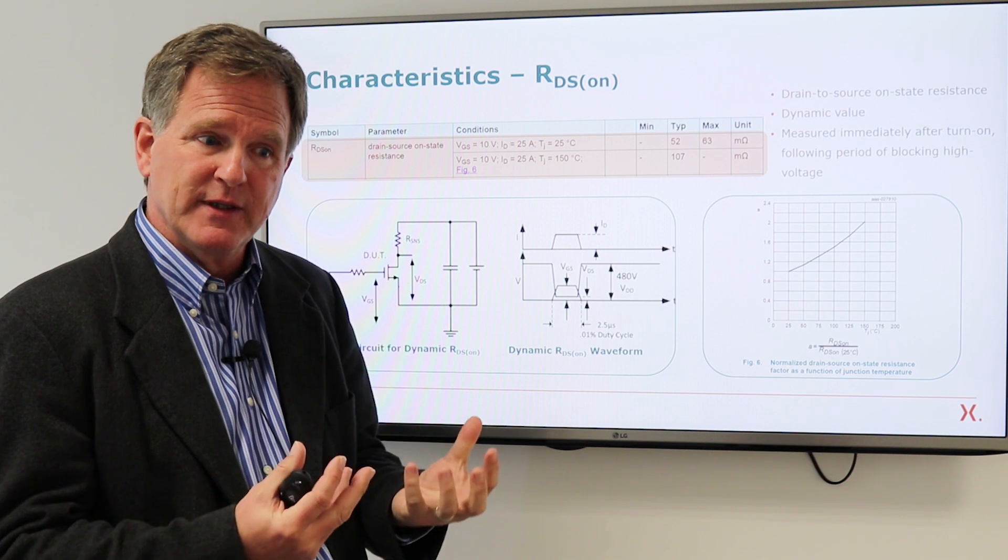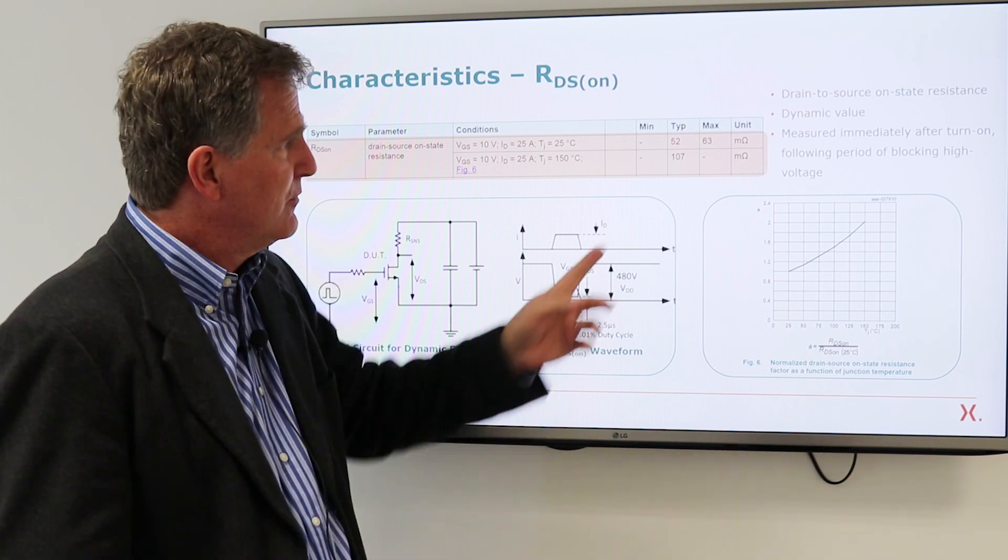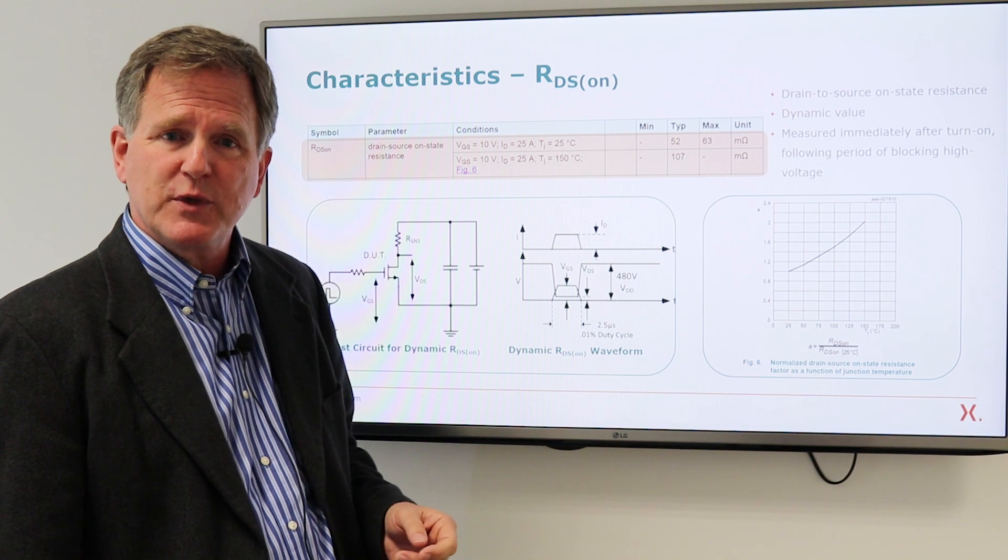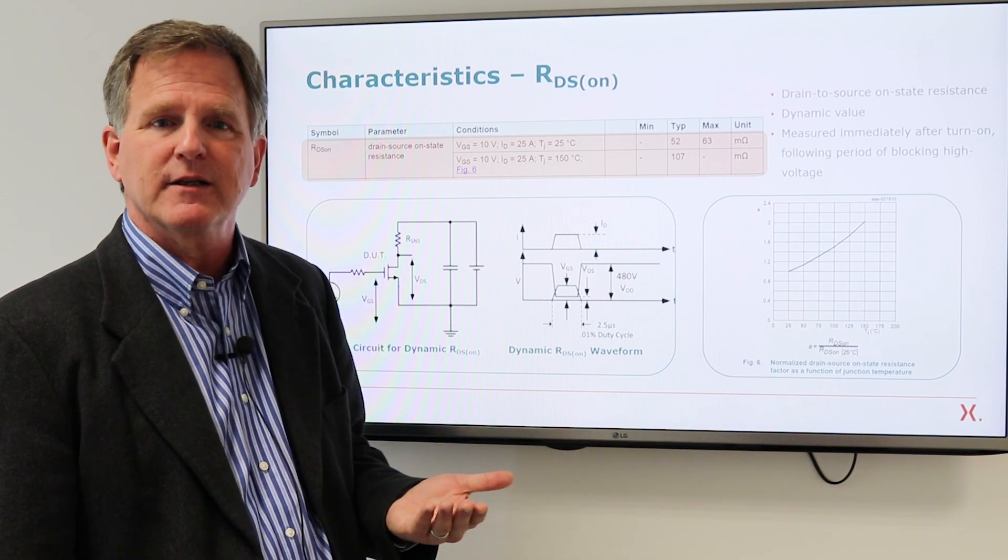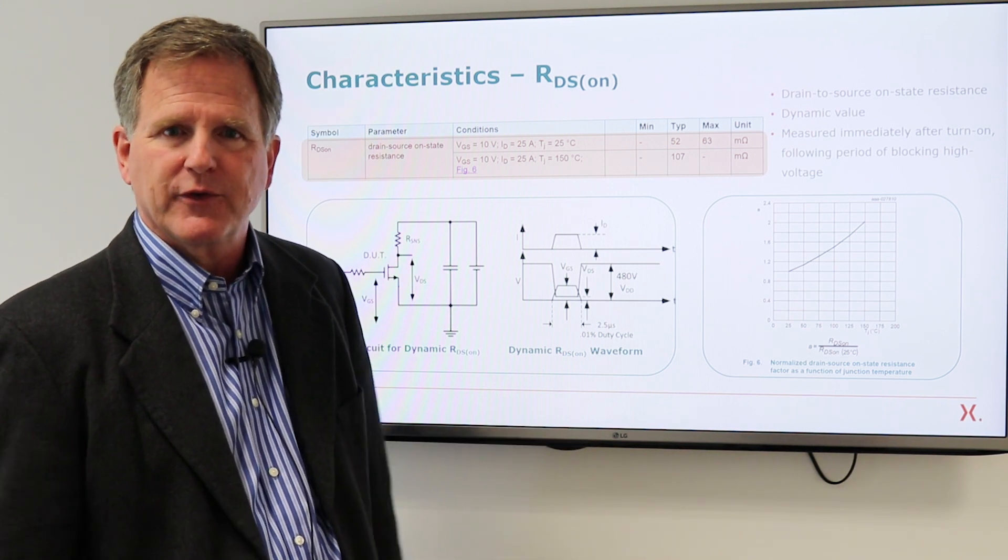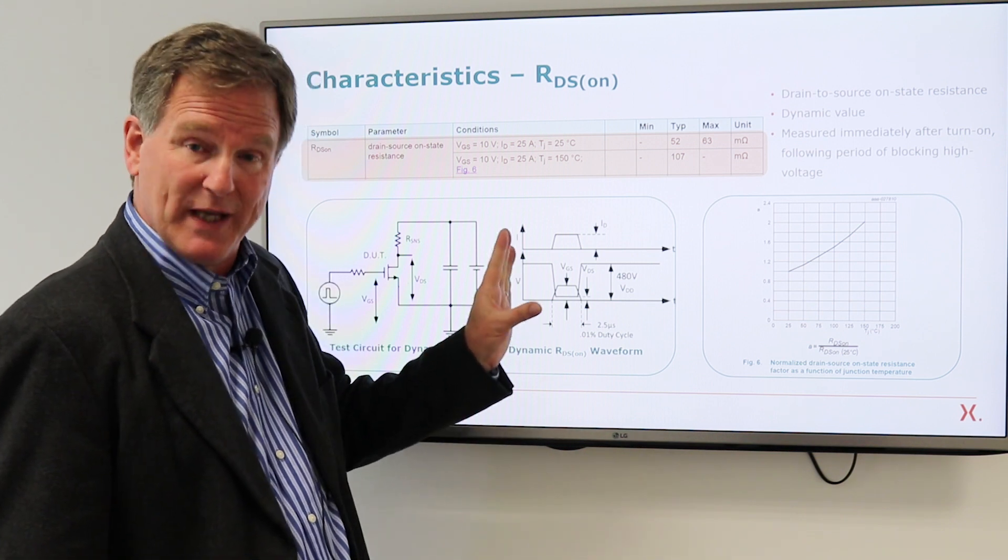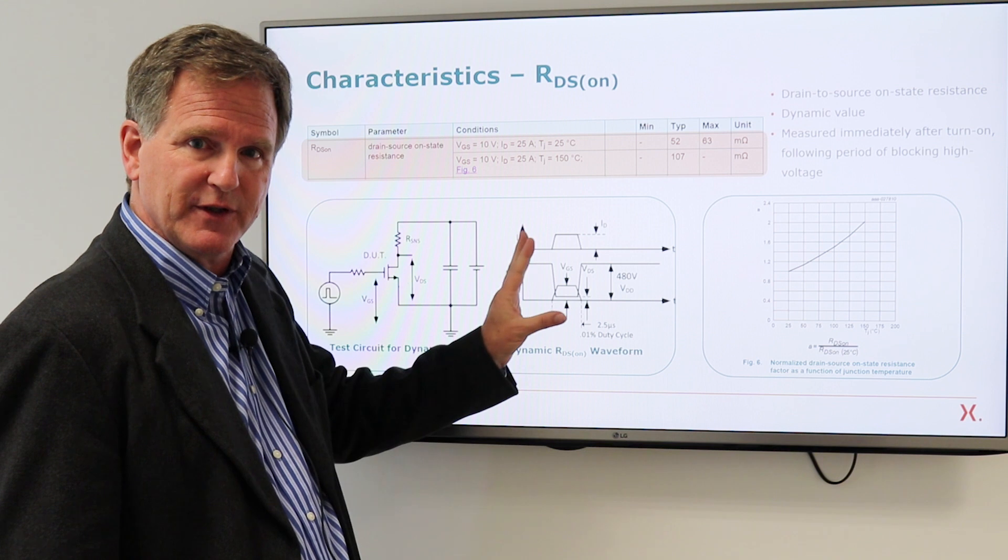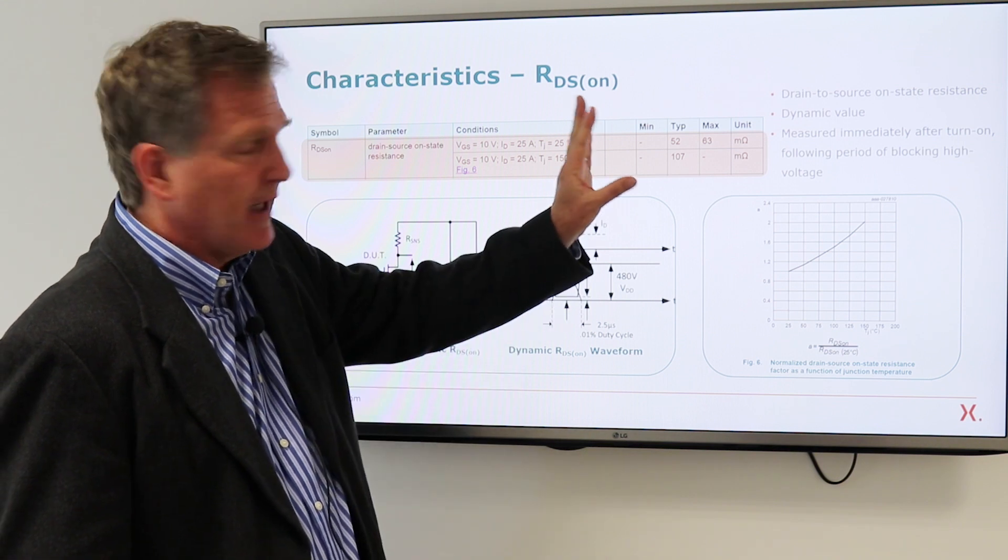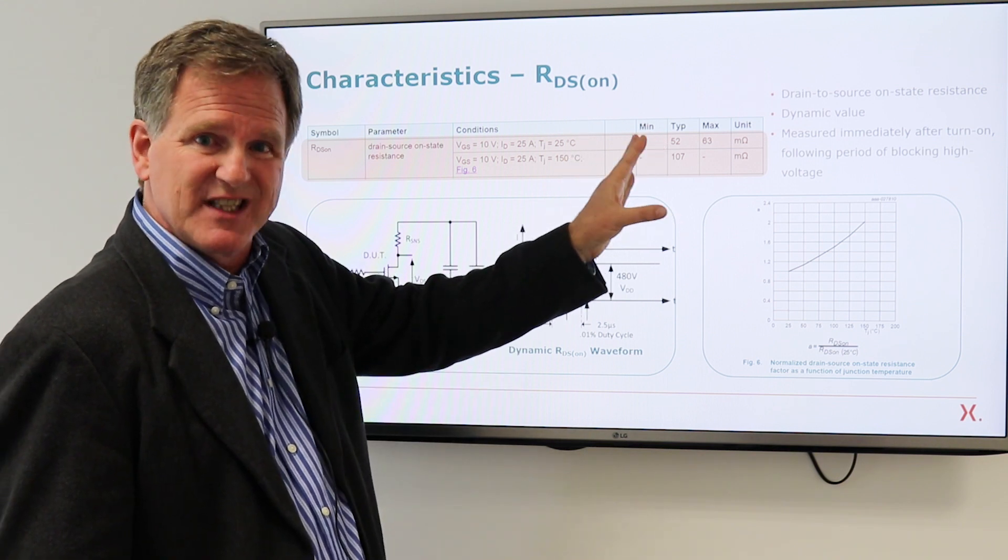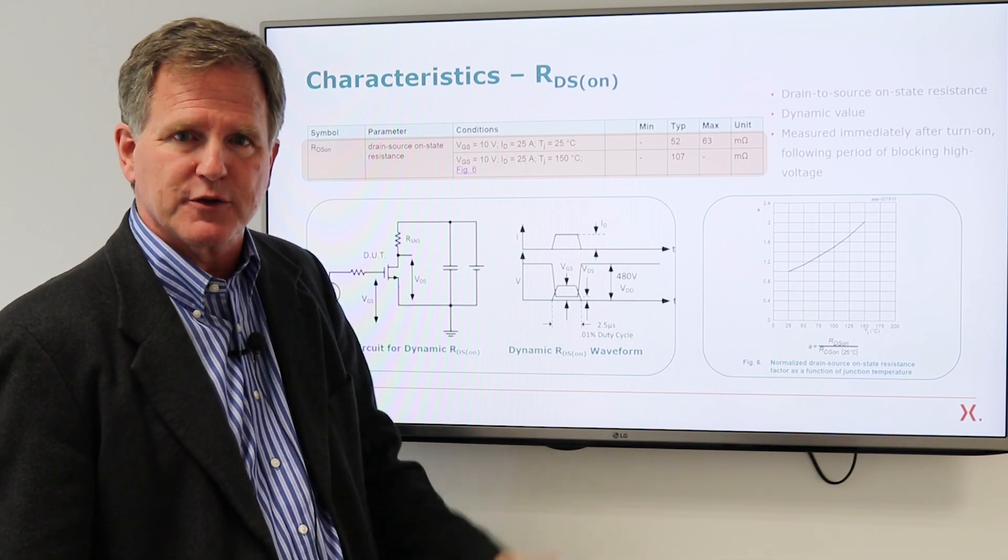And if the manufacturer hasn't done a good job, then the on resistance you experience when you're switching will be significantly higher than what you made measure with, say, a DC meter. Okay, so we feel like we have done a very good job with dealing with the dynamic RDS on. And when we specify an on resistance, this is what you will in fact get in your switching circuit.